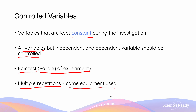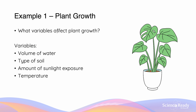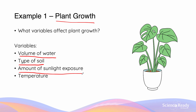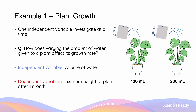Let's look at how we can identify independent, dependent, and controlled variables. Here's our first example: plant growth. Let's think about what variables affect plant growth. These include the volume of water used to water the plant, the type of soil which the plant grows in, the amount of sunlight exposure the plant is going to receive, and the temperature at which the plant is grown.